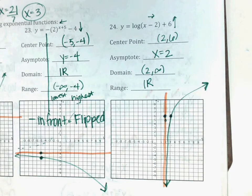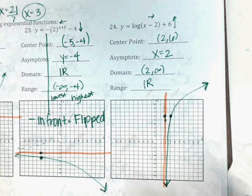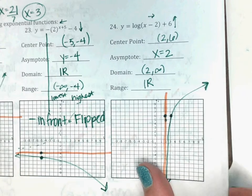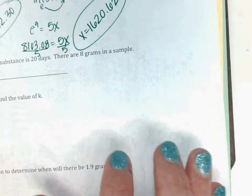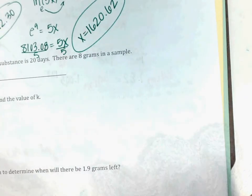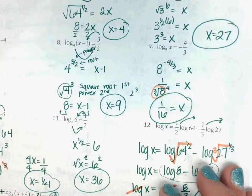Okay, everything on that first page you should be able to do without a calculator. You will have a formula chart. We still have 10 minutes — is there anything off the back page you want to look at? The half-life one? Okay, number 34 — half-life. You will have the formulas for these as well.